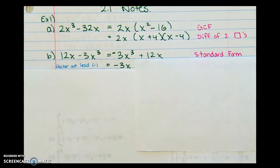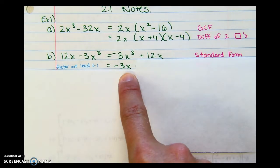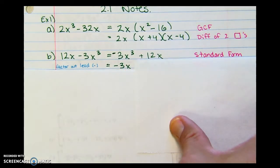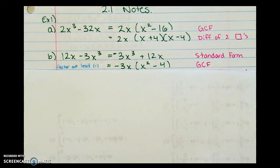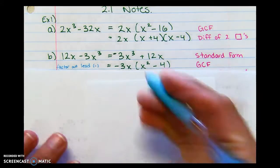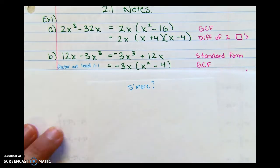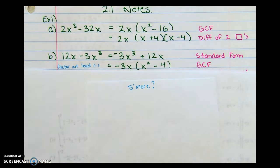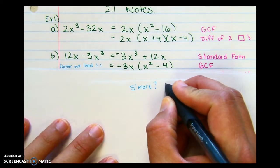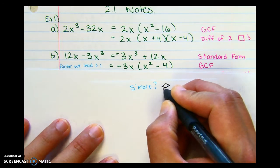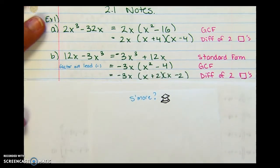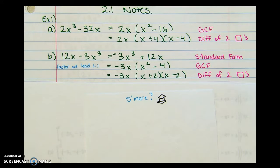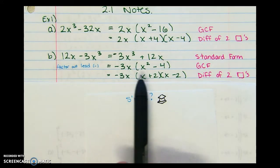After factoring out negative 3x, we start parentheses with what remains. Do we get x squared minus 4? Yes. Can you factor x squared minus 4 some more? Yes — that's difference of two squares, giving us (x + 2)(x − 2). So our final answer has three factors: negative 3x, times (x + 2), times (x − 2).